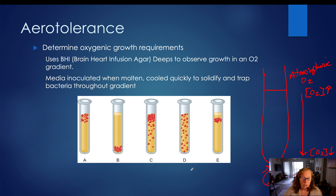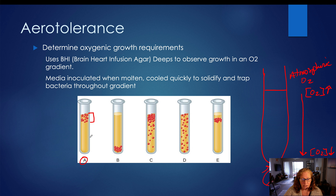To understand where our different growth categories are, let's take a look at this drawing. In our first category, group A, these organisms only grow up at the top and on the surface of the tube. These are referred to as obligate aerobes. They are obligated to grow in an aerobic environment — they can only grow in the presence of oxygen. That's what is meant by obligate.